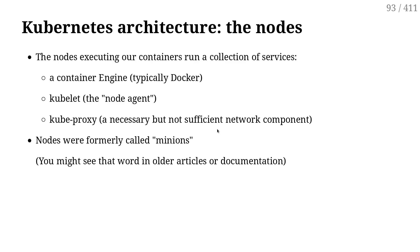Kubelet keeps updating the control plane — for example, reporting when a container has crashed. Then we have kubeproxy, which I'd describe as a necessary but not sufficient network component. Kubeproxy provides part of the network story in Kubernetes. Specifically, when a containerized workload tries to connect to another service, it's the job of kubeproxy to take that connection and load balance it to the right place.